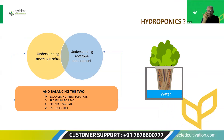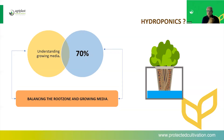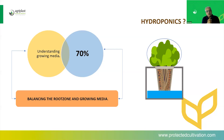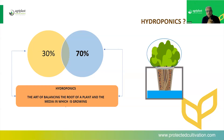We now need to think that if we want to do hydroponics, we need to understand the root zone requirement, we need to understand the growing media, and then we need to create a balance between the two. If we do that successfully, 70% of the care will be taken care of by the aerial part — by controlling the environment or by mastering horticultural skills. And hydroponics has nothing to do with that 70%. Then comes the 30% part, and that is what comes under the scope of hydroponics.